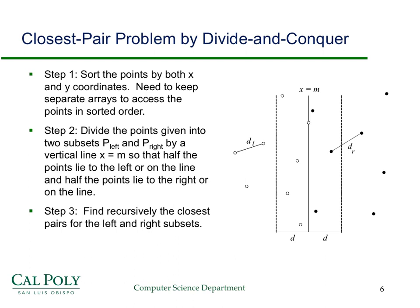The issue is what to do about the points that potentially might cross this line and might be closer to one another than either d_left or d_right. That's where the conquer part comes in for the divide and conquer.